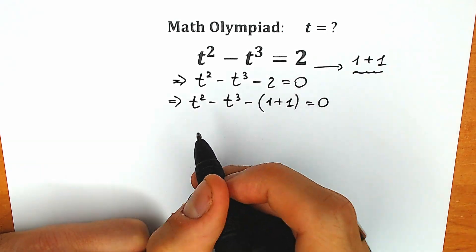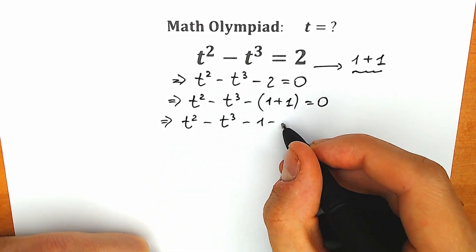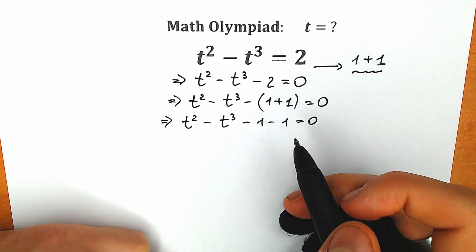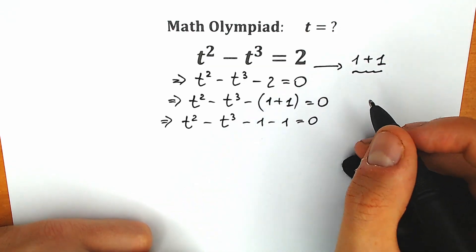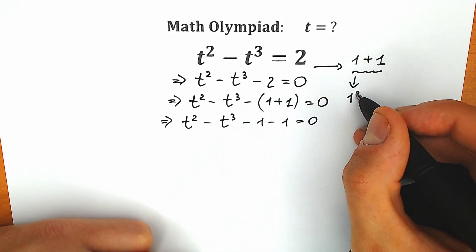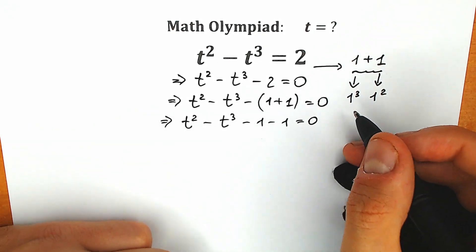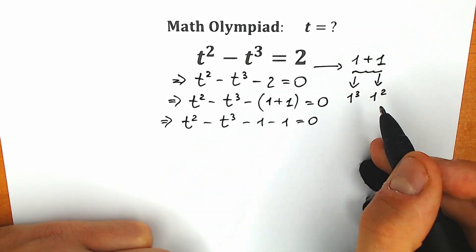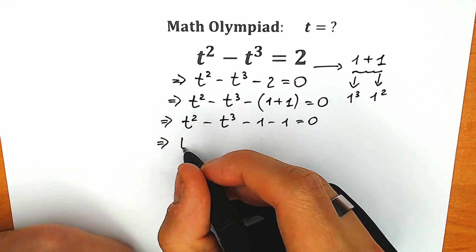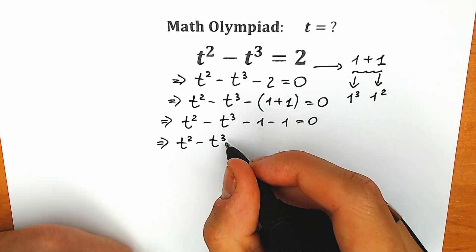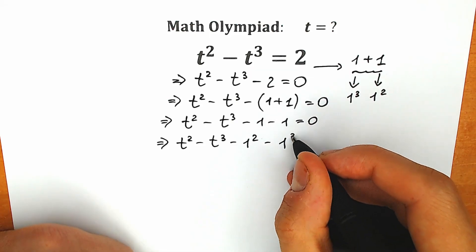Let's open parentheses. We have t squared minus t cubed minus 1 and minus 1. A lot of students might be asking why we do this — why we write 2 as 1 plus 1, because we have a more complicated question. Here's my quick response: this one we can write as 1 cubed, and this one as 1 squared. Then 1 cubed can be grouped with t cubed, and 1 squared can be grouped with t squared — squares and cubes together.